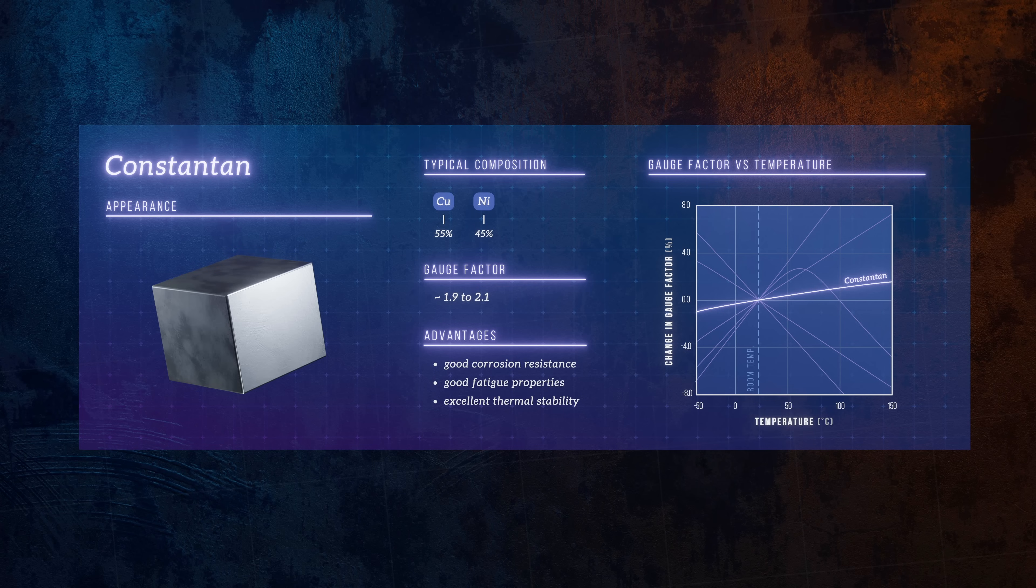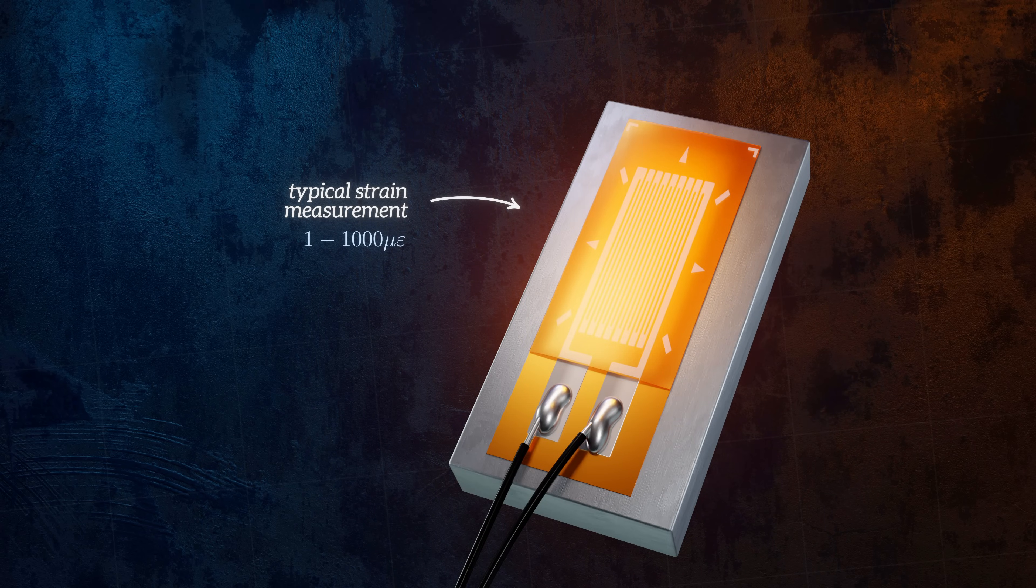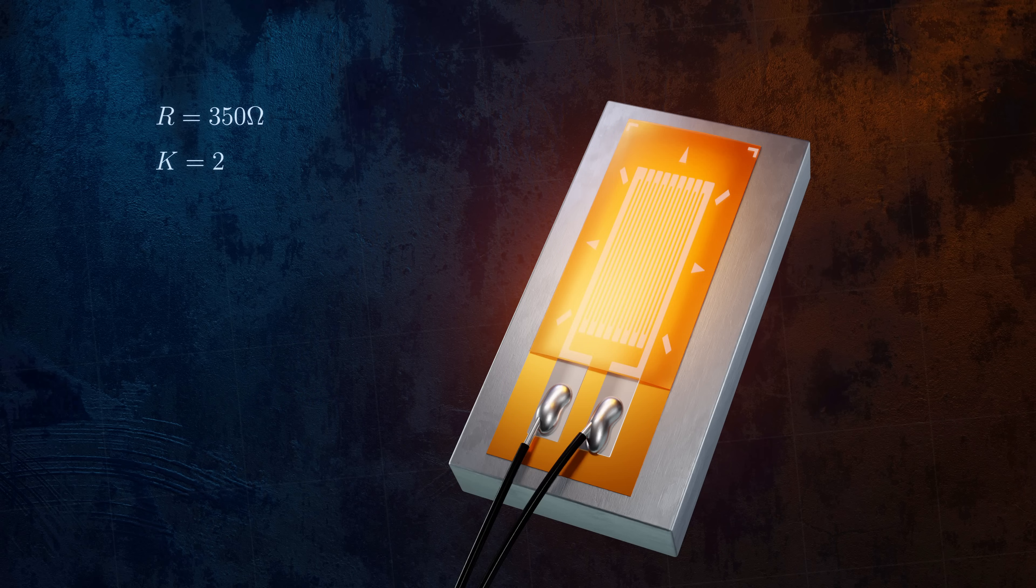Strain gauges are usually used to obtain precise measurements of small strains, typically in the order of 1 to 1000 microstrain. A standard unloaded constantin strain gauge has a resistance of 120 or 350 ohms. Assuming a resistance of 350 ohms and a gauge factor of 2, a tensile strain of 100 microstrain will result in a 0.07 ohm increase in the resistance of the strain gauge.